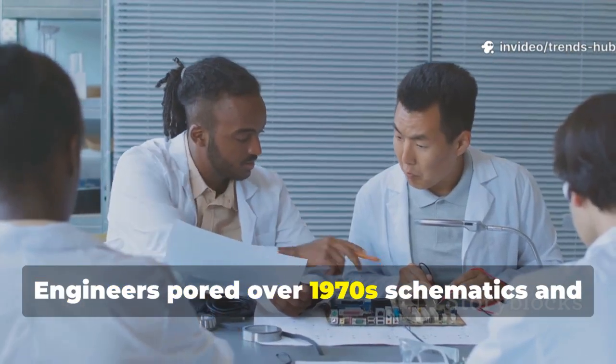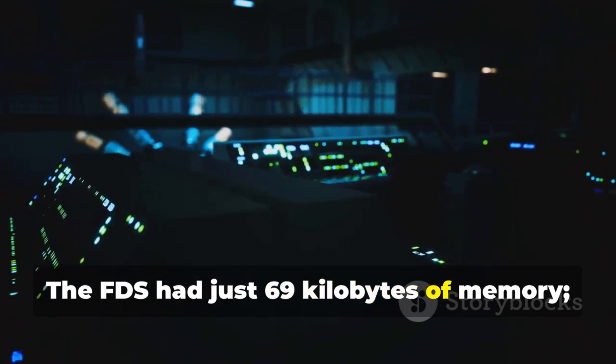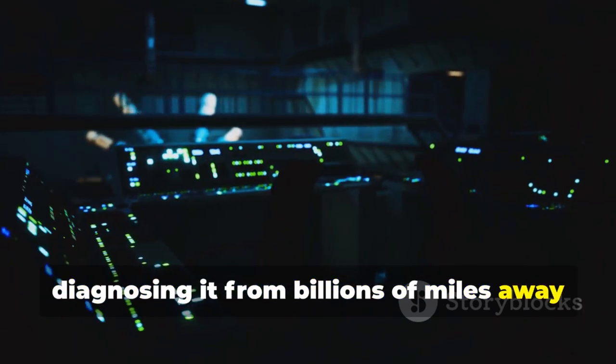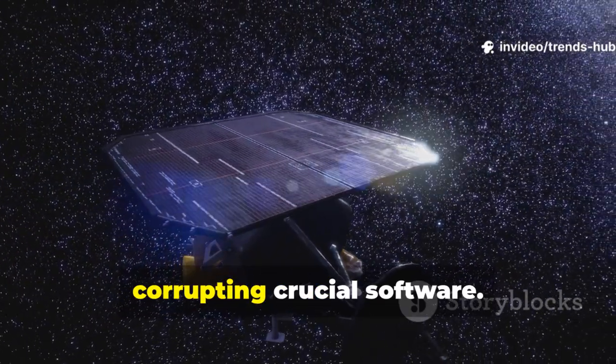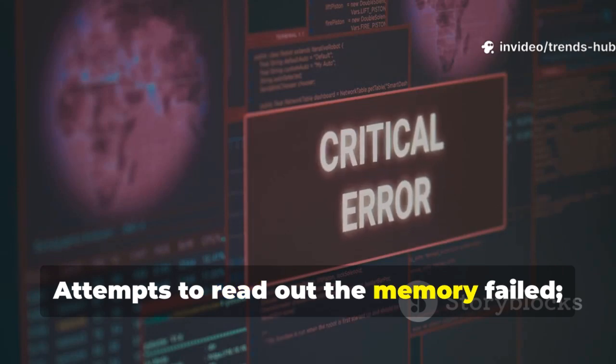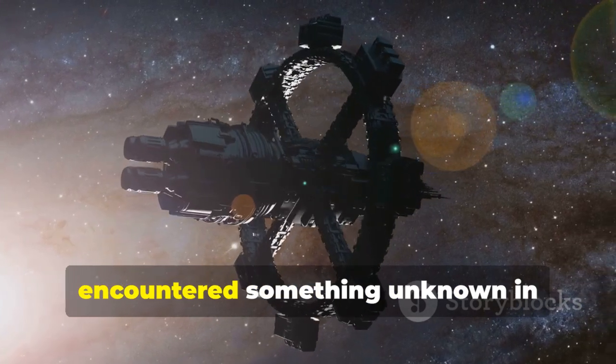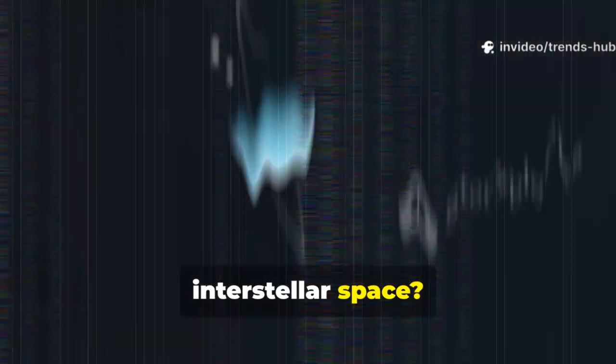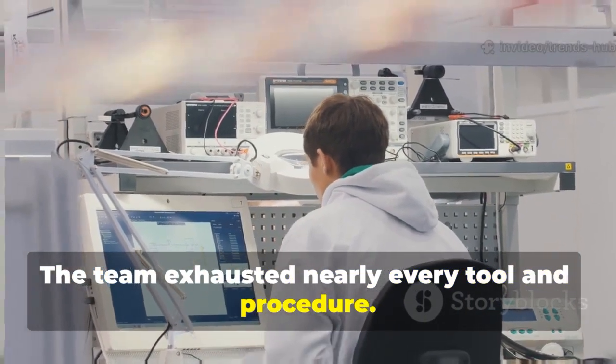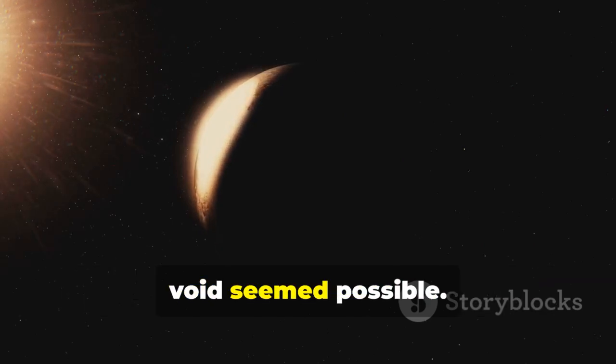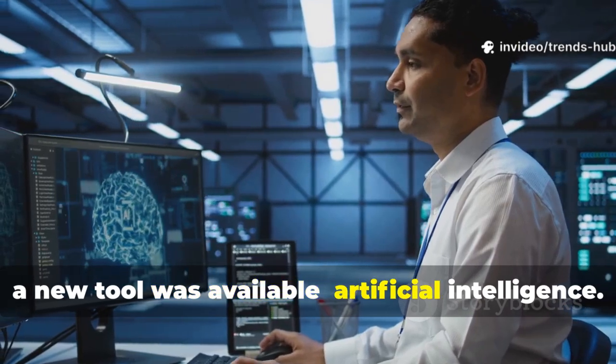Engineers poured over 1970s schematics and consulted retired experts. The FDS had just 69 kilobytes of memory. Diagnosing it from billions of miles away required creativity. A leading theory: a cosmic ray flipped a single bit, corrupting crucial software. Attempts to read out the memory failed. The corrupted data stream blocked progress. Exotic theories surfaced. Had Voyager encountered something unknown in interstellar space? The public imagination was captured by the mystery. The team exhausted nearly every tool and procedure. Letting Voyager drift silently into the void seemed possible. But science is about perseverance. And now, a new tool was available. Artificial intelligence.